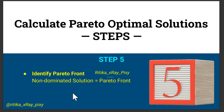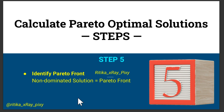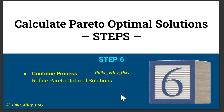After that, we identify the Pareto front. The set of non-dominated solutions forms the Pareto front — these are your Pareto optimal solutions. Each of these solutions represents a trade-off between the objectives where you cannot improve one objective without worsening another. We continue the process for a specific number of iterations, exploring the search space to find the set of Pareto optimal solutions until the maximum number of iterations is reached.